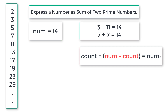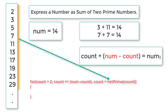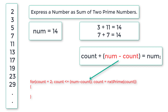Let me show you the code snippet for this for loop. Count is initialized to 2, the first prime number, and for each iteration count is incremented to the next prime number: 2, then 3, then 5, and so on. This for loop iterates until count is less than or equal to num minus count — we'll see shortly why num minus count.